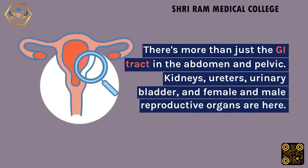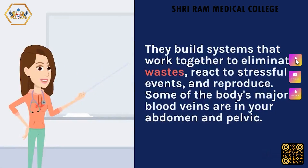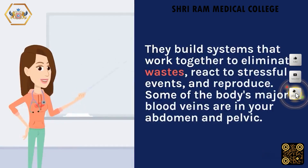There is more than just the GI tract in the abdomen and pelvis. Kidneys, ureters, urinary bladder, and female and male reproductive organs are also here. Together they build systems that work to eliminate wastes, react to stressful events, and reproduce.